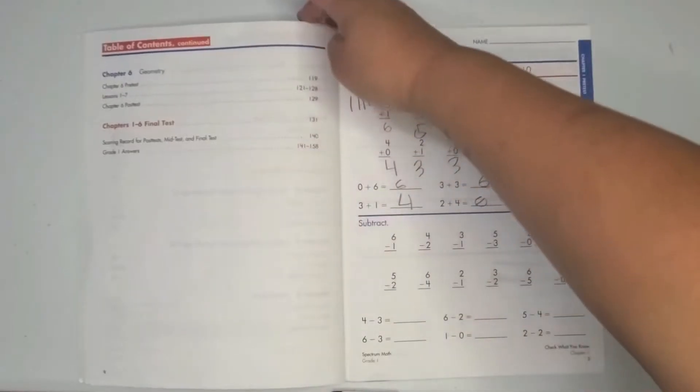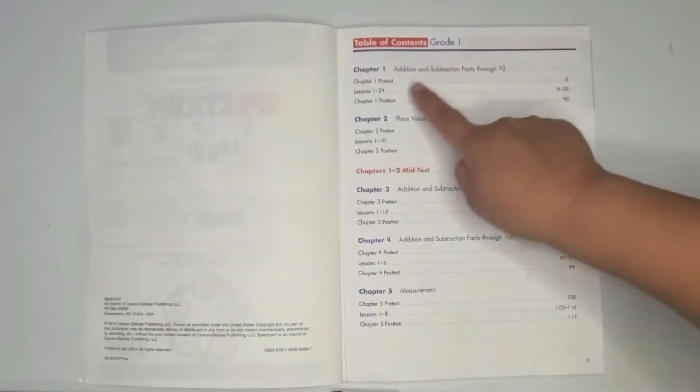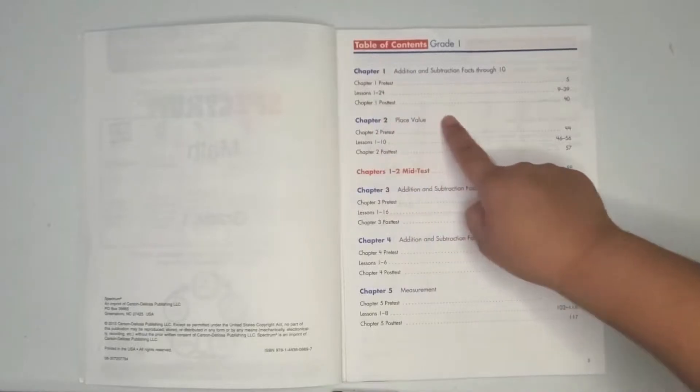Then you have a final test at the end. Each chapter has a pre-test, then it has your lessons, and then it also has a post test. Now you don't need to do the pre-test or the post test if you don't want to. You also don't need to do every single lesson or every single problem on each page.